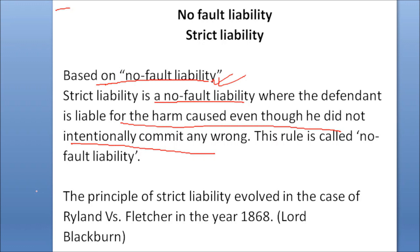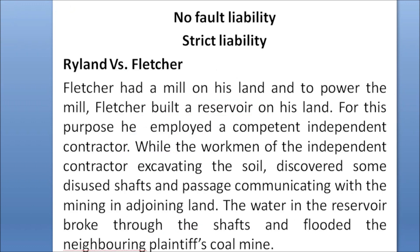Strict liability is a rule which was evolved for the very first time by Justice Blackburn in the famous case Rylands v. Fletcher, 1868. Rylands v. Fletcher had a mill on his land, and to power the mill, Fletcher built a reservoir on his land.